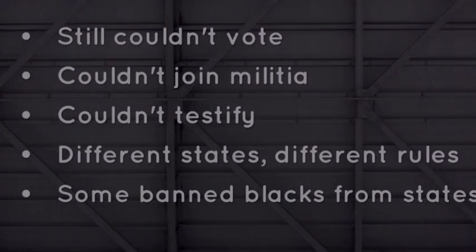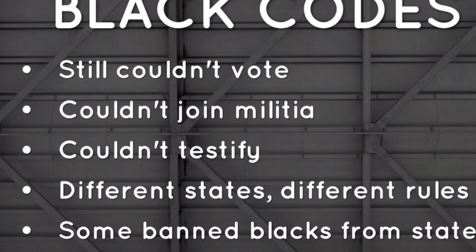In the United States, the Black Codes were laws passed by Southern states in 1865 and 1866 after the Civil War. These laws had the intent and the effect of restricting African Americans' freedom. In the South, these were generally included in slave codes. The goal was to reduce the influence on free blacks.